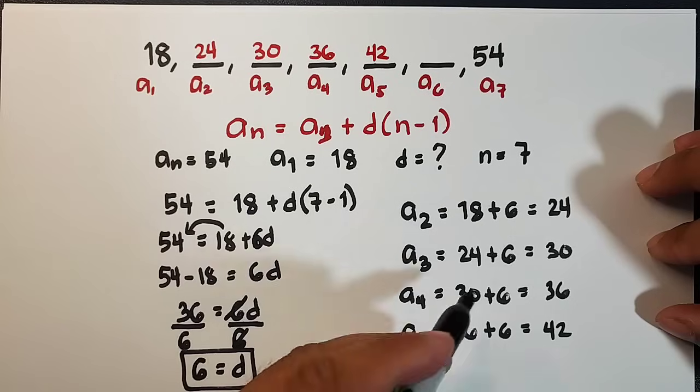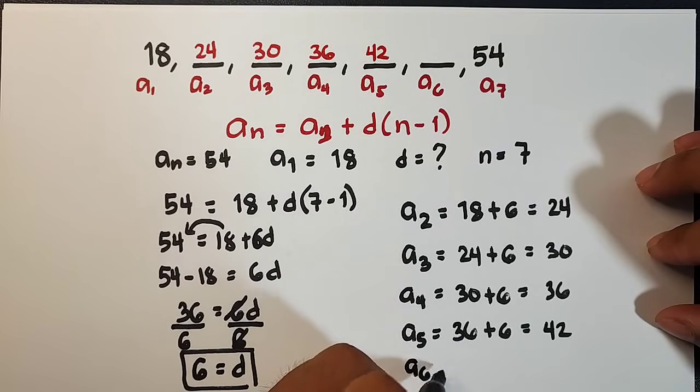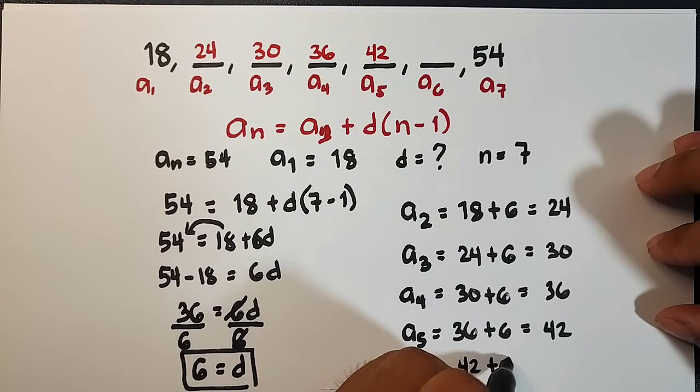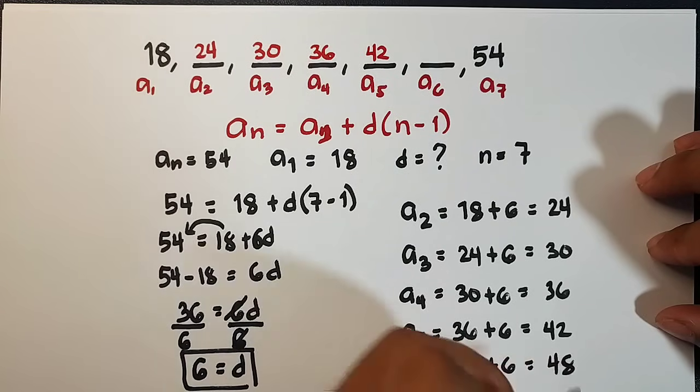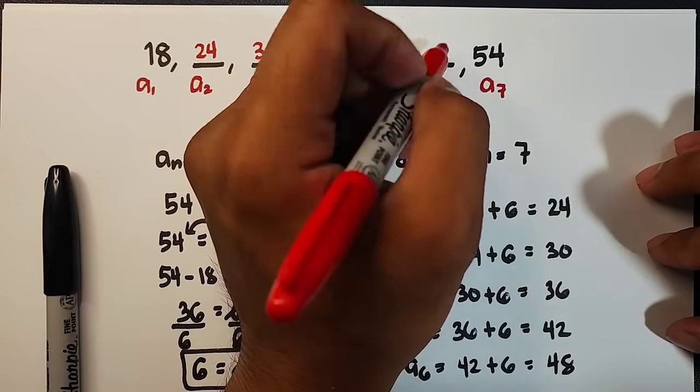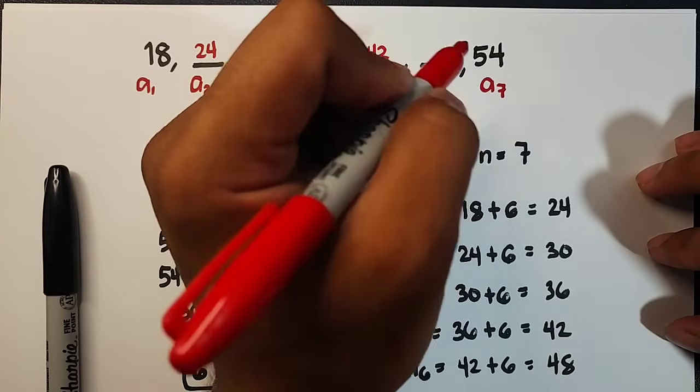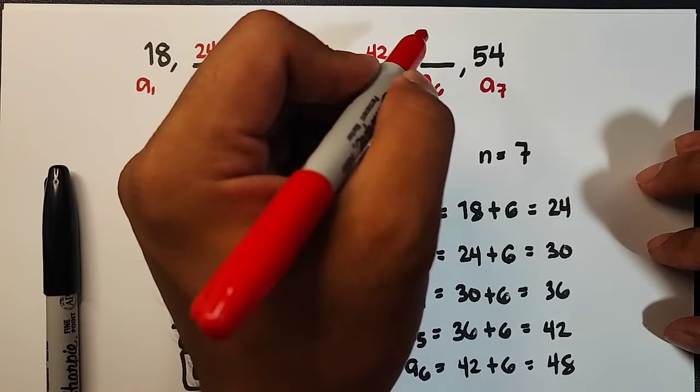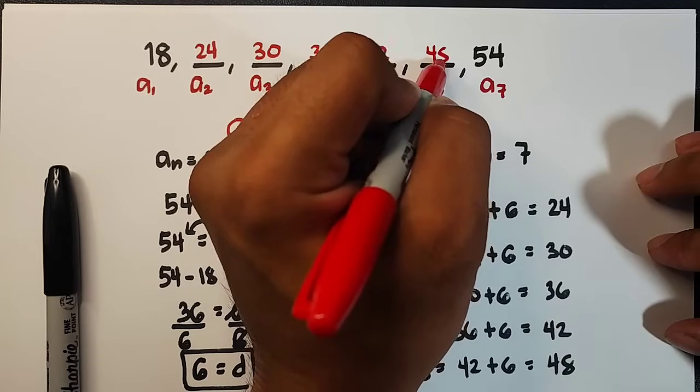And lastly, for the a sub 6, that is 42 plus 6. So this is 48. So as you can see, we already solved the 5 missing or the 5 arithmetic means between 18 and 54.